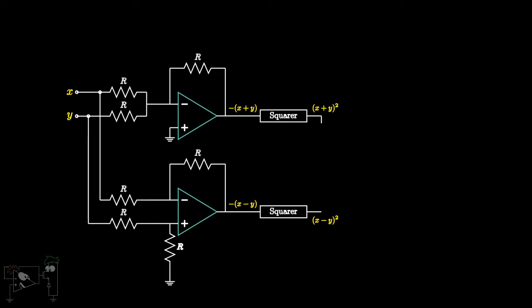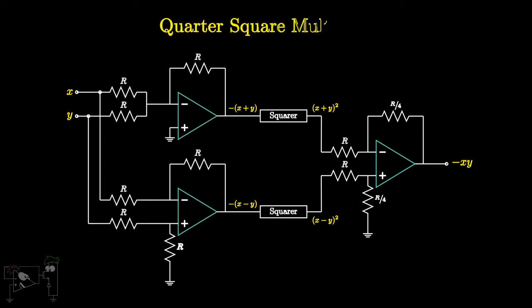Taking the difference and scaling down by 4 can be together done by another difference amplifier with suitable resistors. And we are done. We have successfully built an analog multiplier. This circuit is known as the quarter square multiplier.